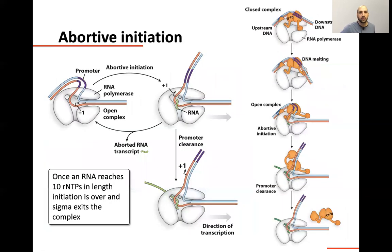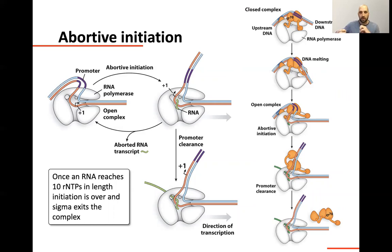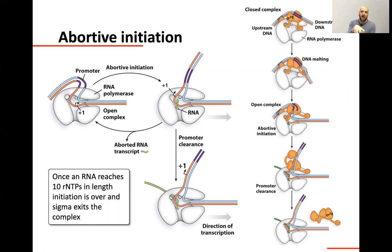Coming to the end of initiation: we've covered recruiting the polymerase as step one, and opening the complex as step two. The last thing we have to do is clear the polymerase off the promoter — it needs to move away. Both in bacteria and in eukaryotes, polymerases are kind of anchored in place. The sigma factors and transcription factors grab and keep the polymerase stuck, so it's actually a pretty big deal to move off of that promoter. To clear the promoter is challenging because the whole purpose was to grab proteins and stick them in place.